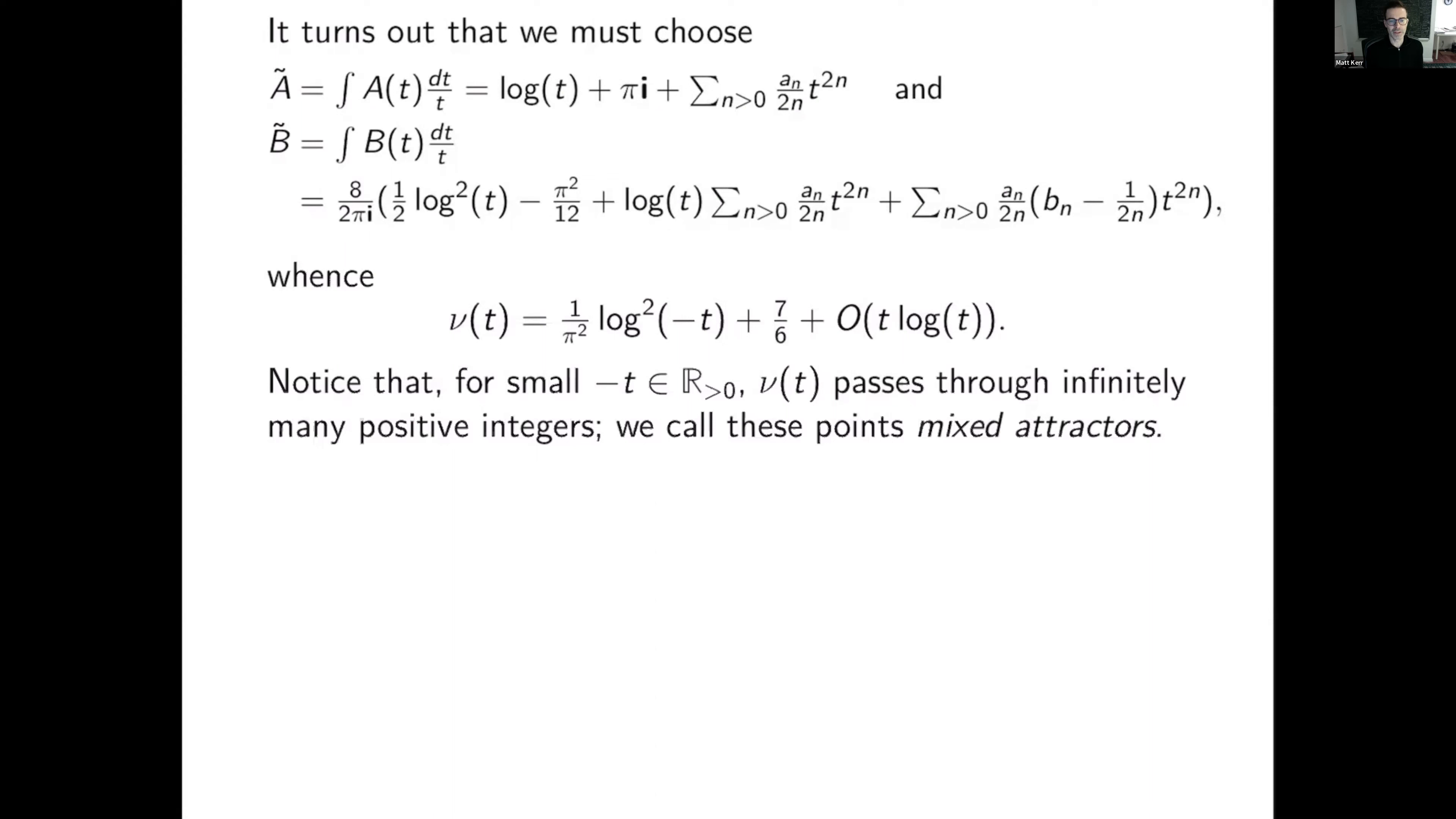So we get nu equals this quantity, where the o of t log t is very small as t goes to the origin, and I'm left with the first two terms. For small negative t, nu of t passes through infinitely many positive integers, right? Because log squared gets very large, and everything is real. We call these points mixed attractor points.